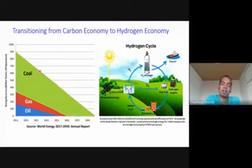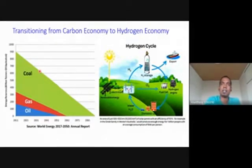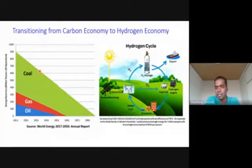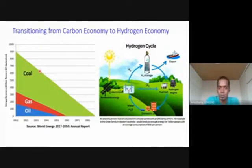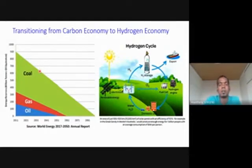When renewable energy sources are at peak, we need to store that energy and use it on demand when unavailable. One obvious option is large grids made of batteries and supercapacitors, but the main issue is that their capability to store electric energy is very, very low — not even 0.1% of the electric energy generated daily. The amount of energy you can store with all available lithium batteries and supercapacitors in the world is not even 0.1% of what we generate every day. Conventional batteries and supercapacitors simply cannot help us store large amounts of renewable energy.